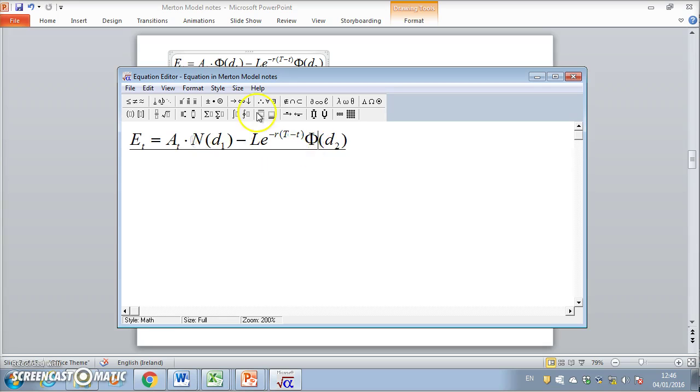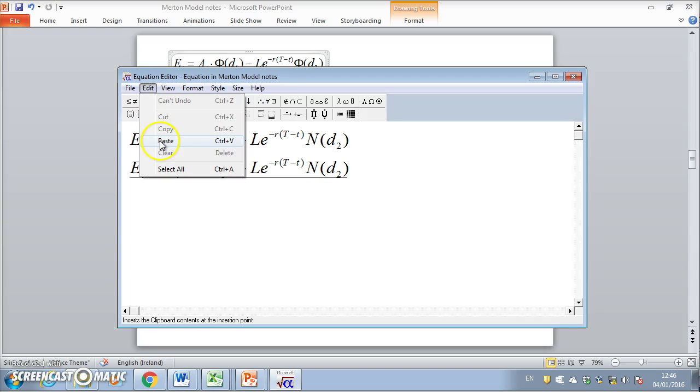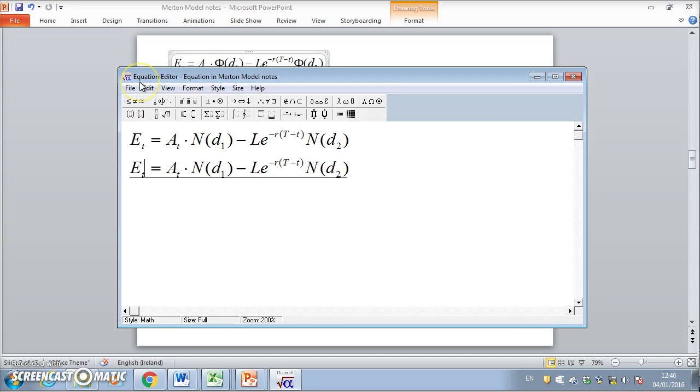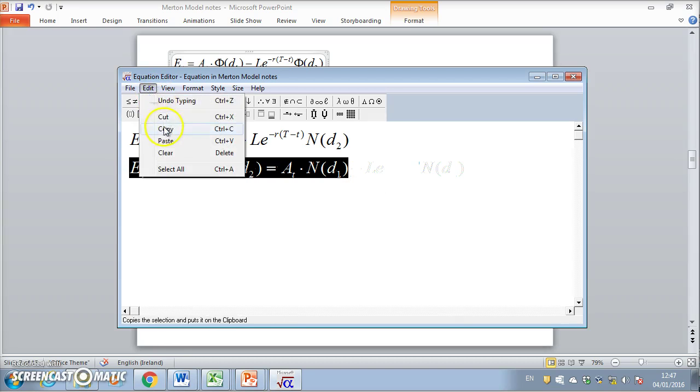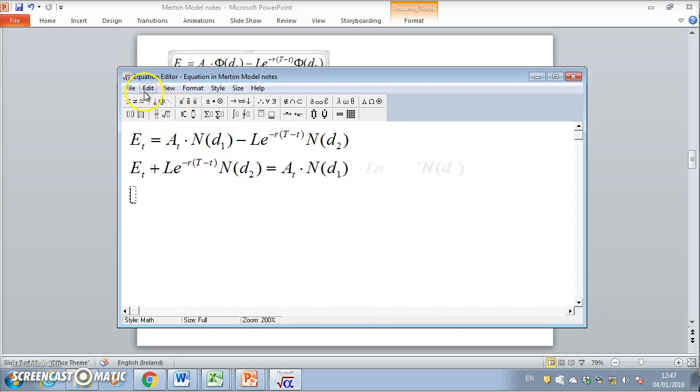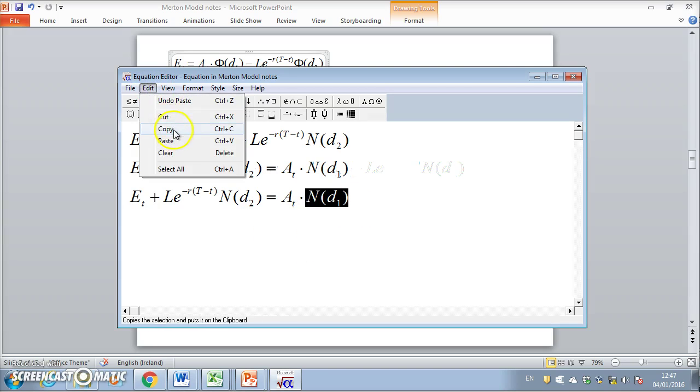Let's change phi to N just to reinforce these are normal cumulative probabilities, and d1 and d2 are standard measures. We can isolate A, so let's take L to the other side of the equal sign where it becomes positive, and isolate the value of the assets.